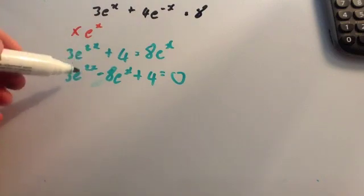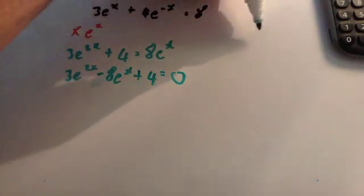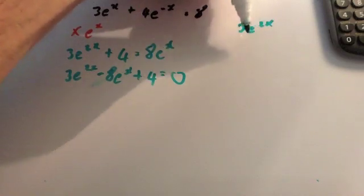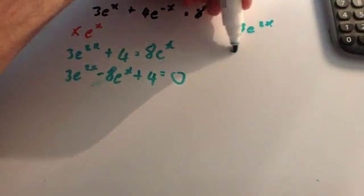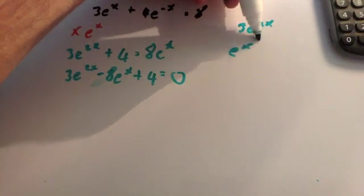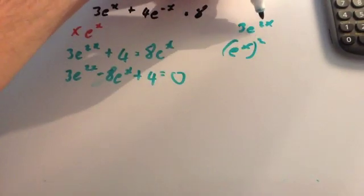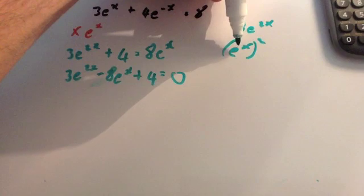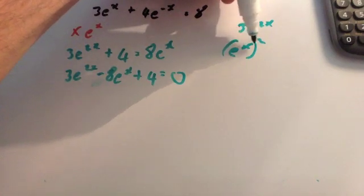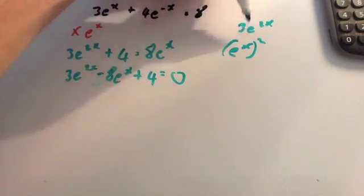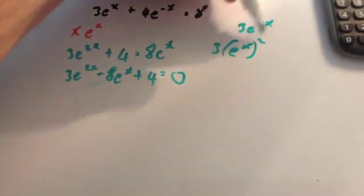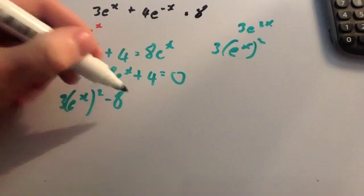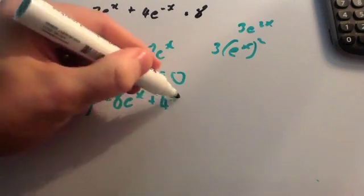Now let's look at this e to the 2x for a minute. This 3e to the 2x — the e to the 2x can be rewritten as e to the x, all squared. The reason is, if you've got a power to a power, you multiply those two together, and you'd get e to the 2x. So you rewrite that and get 3 times (e to the x) squared minus 8e to the x plus 4 equals 0.